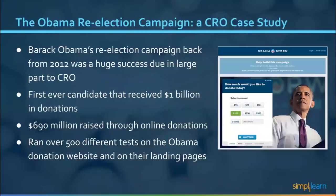One of the most well-known examples of conversion rate optimization at its best is Barack Obama's re-election campaign back in 2012. His campaign was so successful it surpassed everyone else who came before him. He wasn't just the first African-American U.S. President, but also the first ever candidate to receive $1 billion in donations, out of which a staggering $690 million were raised through online donations. So exactly how did he manage to get these impressive results? Much of it came down to the campaign's conversion rate optimization strategy.